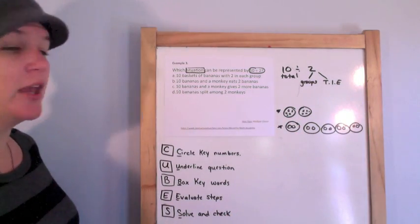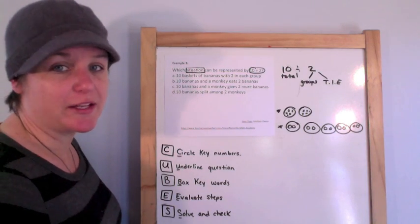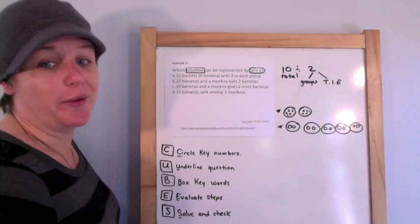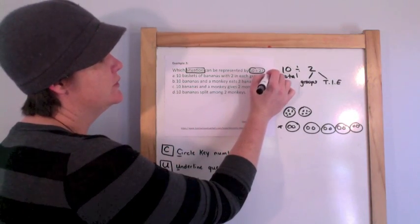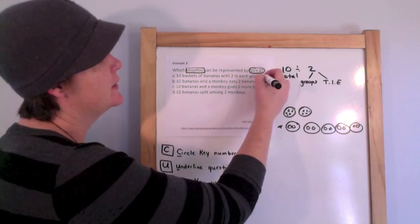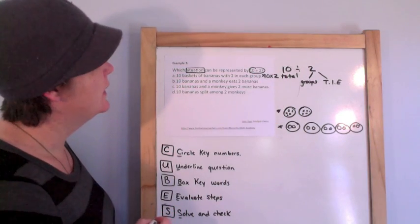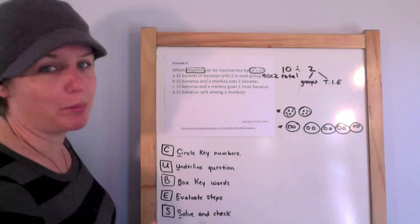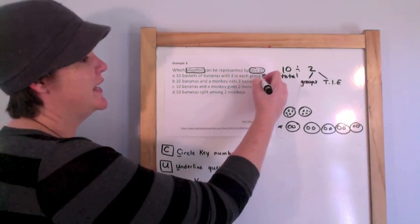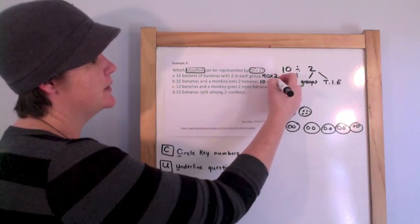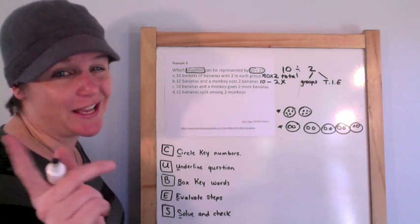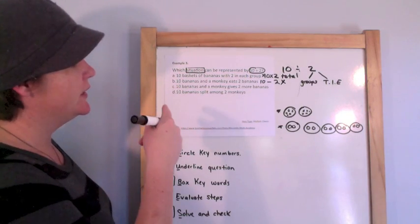All right. So we have 10 baskets of bananas with two in each group. Well guys, that would be 10 times two. We're looking for 10 divided by two. So that is not right. 10 bananas and a monkey eats two bananas. So we have 10 bananas and then a monkey comes along, eats two. It means he's taking two away. We're looking for 10 divided by two, not 10 minus two.